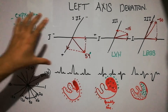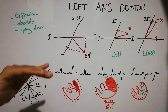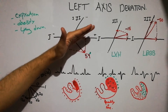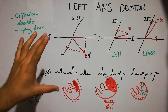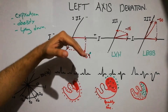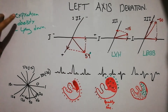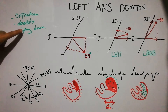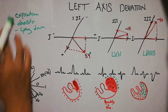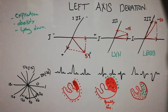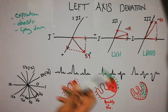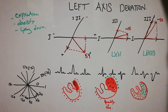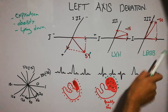We discussed the causes of left axis deviation — that the mean vector can be shifted toward the left or right side. Conditions that temporarily shift the vector toward the left include deep expiration, obesity, and lying down. The factors which can permanently shift the vector toward the left side are left ventricular hypertrophy and left bundle branch block.